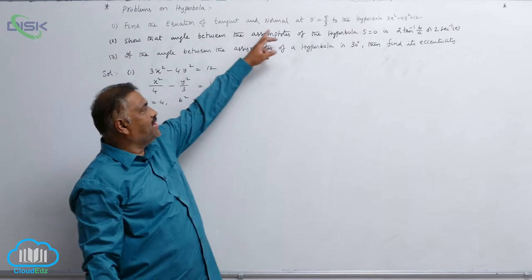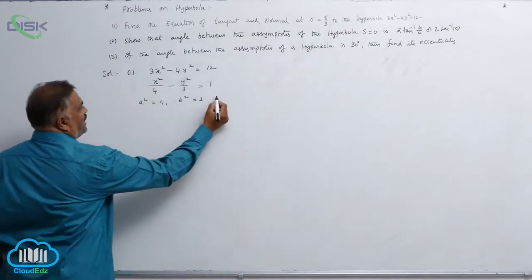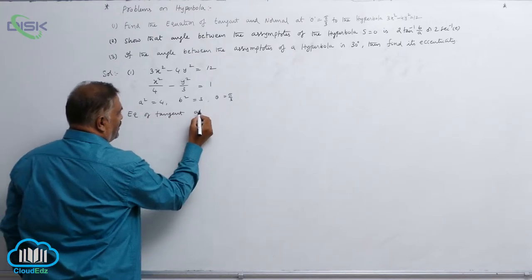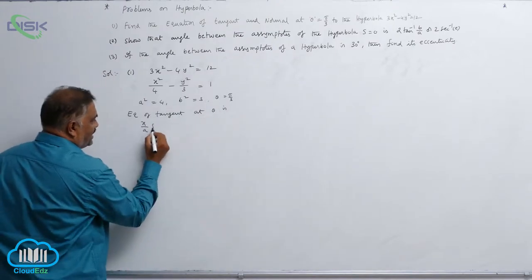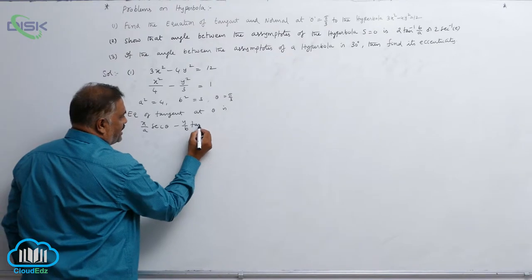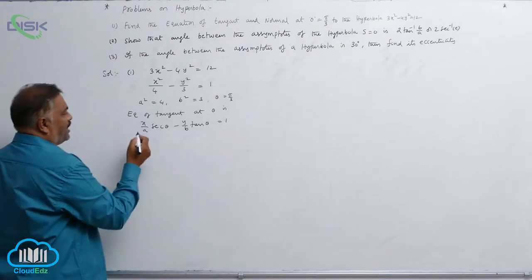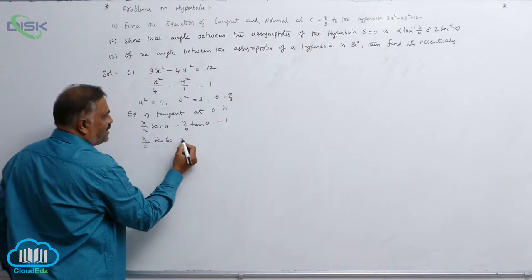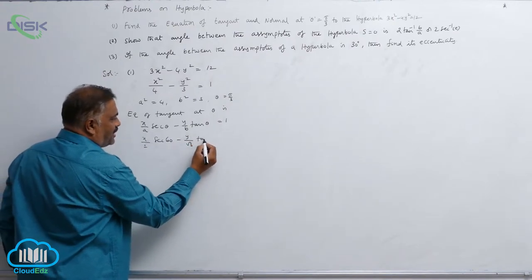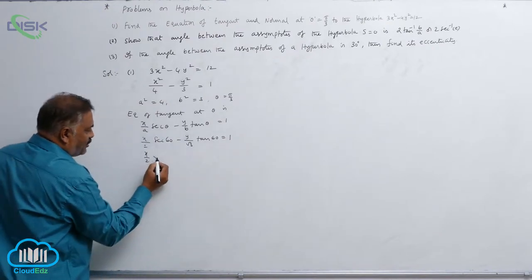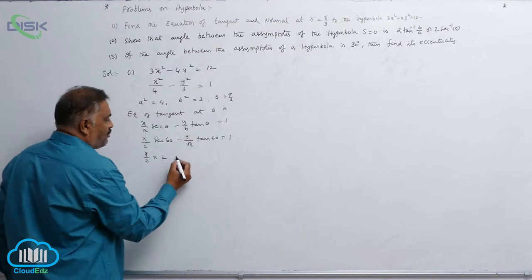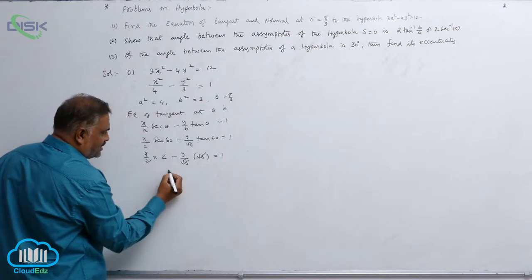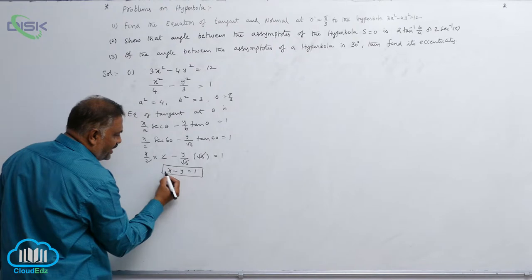We require the tangent and normal at theta equal to pi by 3. The equation of tangent at theta is: x by a times secant theta minus y by b times tan theta equal to 1. Substituting: x by 2 times secant 60° minus y by root 3 times tan 60° equal to 1. Since secant 60° is 2 and tan 60° is root 3, these cancel to give x minus y equal to 1 as the equation of the tangent.